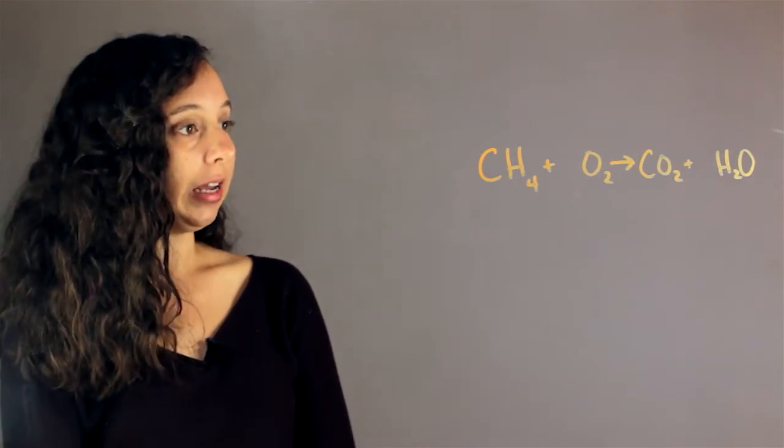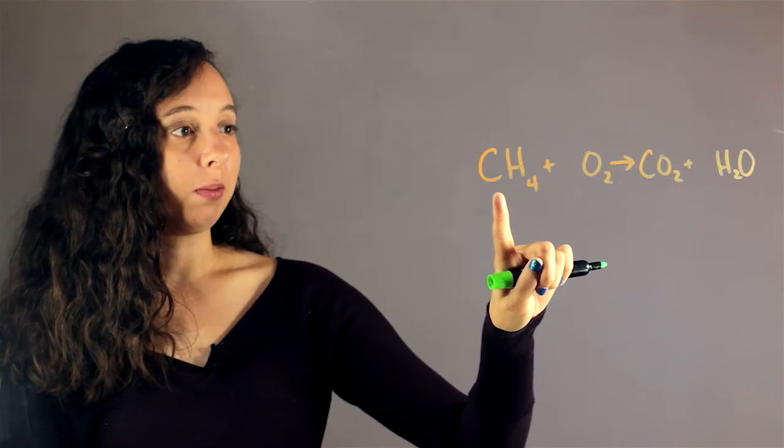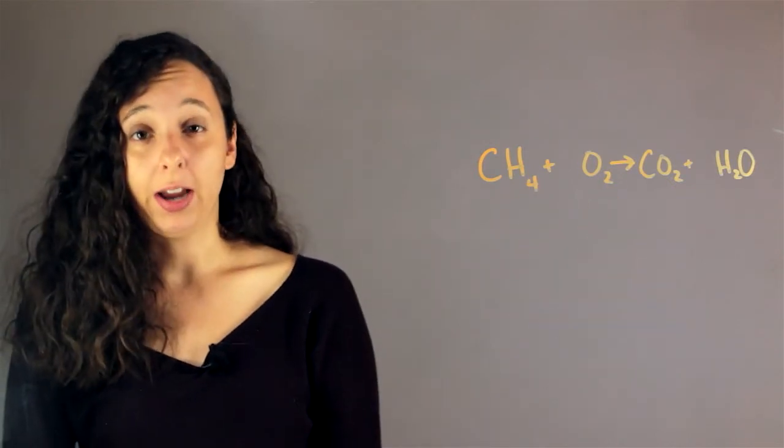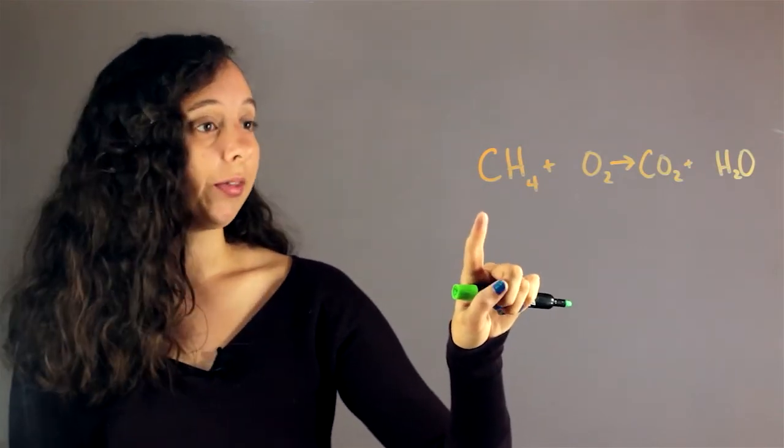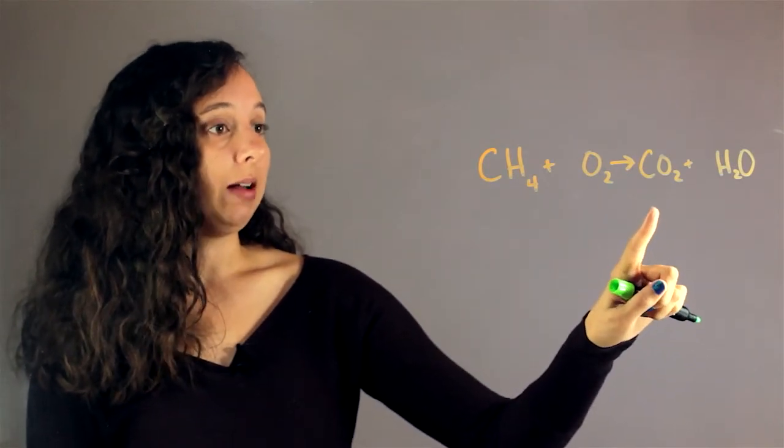The first thing we do is look at something that's unique, and that's usually going to be anything that's not hydrogen and oxygen, which are in most reactions. Let's start with carbon and see if it's balanced. Right now we have one carbon on the left side and one carbon on the right side, so that's balanced.